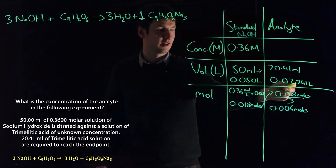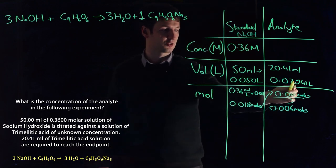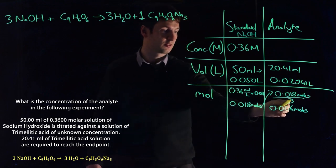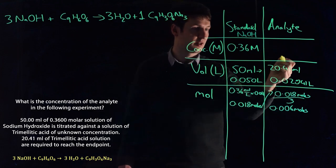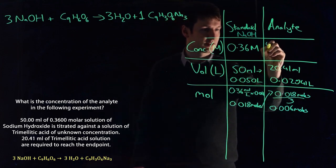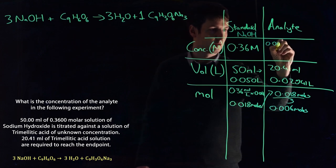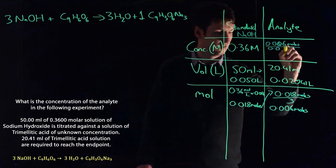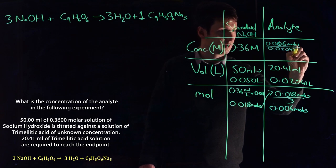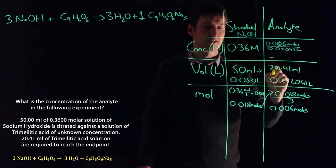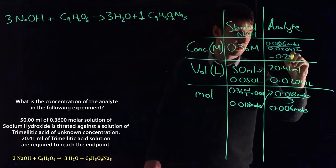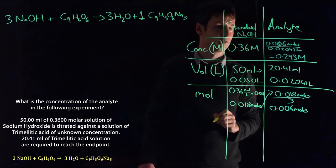Now we have a number of moles. We know that our titration, this took 20.41 milliliters or 0.02041 liters. So divide our number of moles by our number of liters and we'll get our concentration back again. So our number of moles is 0.006 moles divided by 0.02041 liters is going to give us a concentration of 0.293 moles per liter.